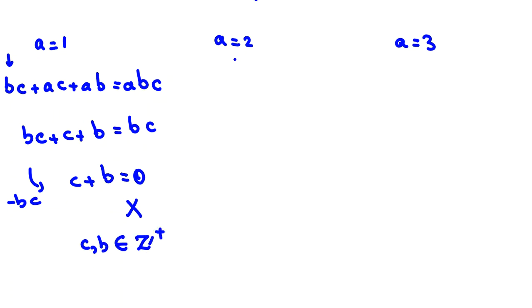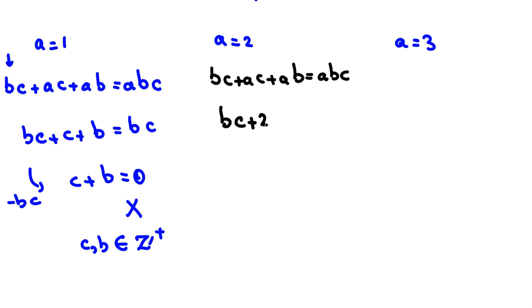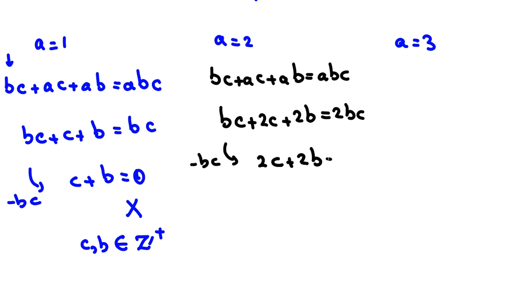In the second case, A = 2. We replace A with 2 in the main equation: BC + 2C + 2B = 2BC. Subtracting BC from both sides gives 2C + 2B = BC.